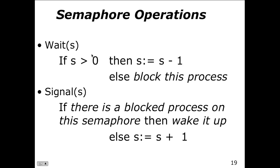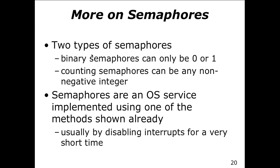Semaphores are an operating system service closely tied to the OS rather than application-level. You can also create semaphores from an application level using semaphore libraries. There are two types: a binary semaphore, which is on or off, and a counting semaphore, which may have any non-negative integer value, used when more than one process is being synchronized.